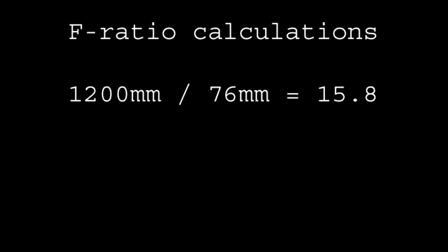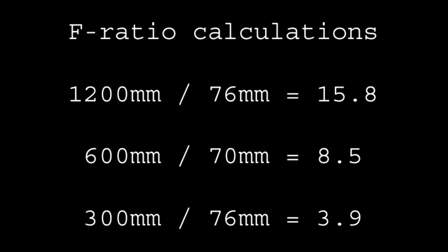That long refractor is nearly 16 to 1 as we divide 1200mm into the aperture of 76mm and arrive at 15.8 for an F-ratio, or about F-16, quite a long focal ratio telescope. The mid-length refractor is a shorter F-ratio, 600mm divided by 70mm is F-8.5. The short little refractor has the shortest focal length of all, 300 divided by 76 is 3.9, or close to F-4. F-3 to F-5s are definitely short F-ratio telescopes.